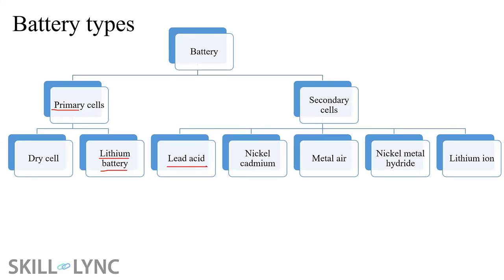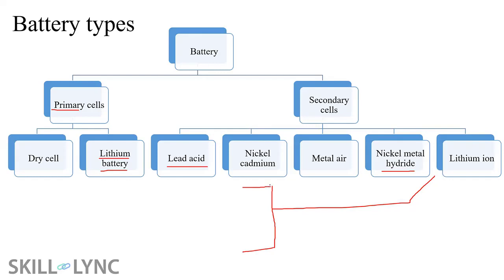Even today, one of the kings of batteries is the lead-acid battery. Several other chemistries evolved over time: nickel-cadmium, metal-air, and nickel-metal hydride — the latter being famous with the Toyota Prius hybrid electric vehicle. Nickel-metal hydride batteries are also found in cordless phones and toys. Lithium-ion batteries themselves can be classified into four or five different chemistries.